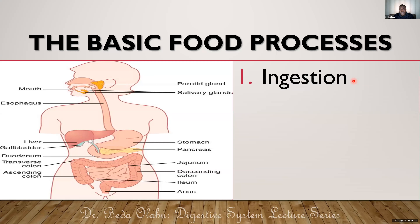In physiology you'll be told that deglutition has three phases: the oral phase of swallowing, the pharyngeal phase of swallowing, and the esophageal phase of swallowing. Out of those, the pharyngeal phase of swallowing is the most critical, because the pharynx is a common pathway for both food and air.